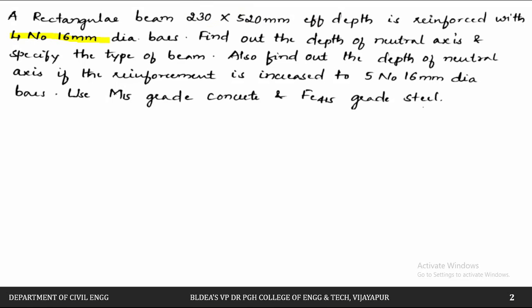The question asks us to find out the depth of the neutral axis, which is XU, and to specify the type of beam — that is, whether it is an over-reinforced section or an under-reinforced section.